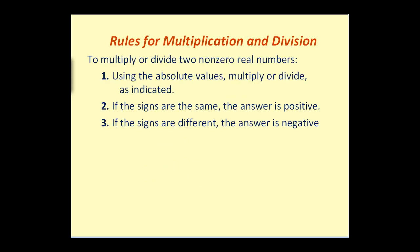Now let's talk about the general rules for not only multiplication but also division. The rules for multiplication and division of signed numbers are the same. If you're multiplying or dividing two numbers where the signs are the same — both positive or both negative — the answer is positive. And if the two numbers have different signs, meaning one's positive and one's negative, the answer will be negative.